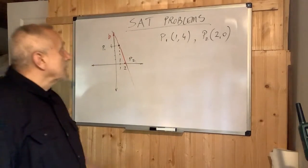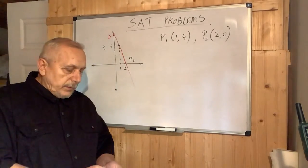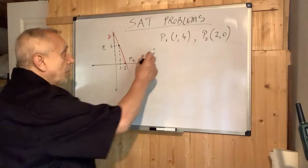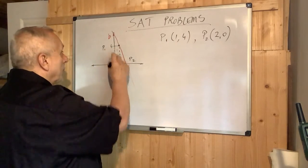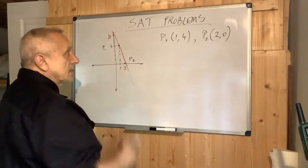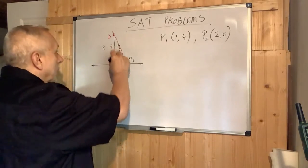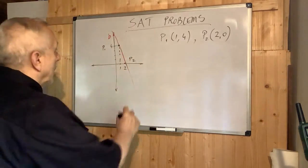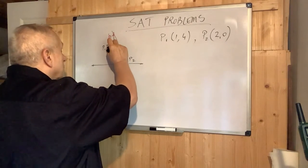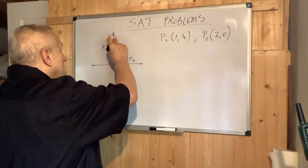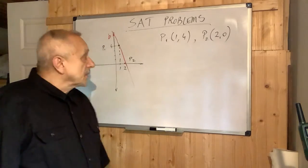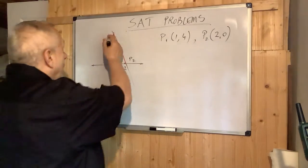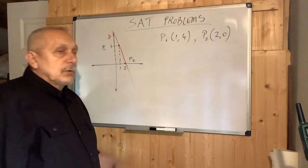This is quite a simple SAT problem. We have these two points P1 and P2. The coordinates are (1, 4) and the other one is (2, 0). The line going through these two points, when extended, intersects the y-axis at point B. That's the y-intercept. The question is: how much is B?